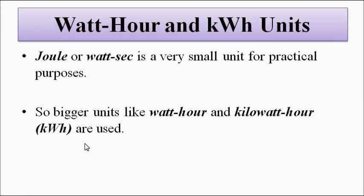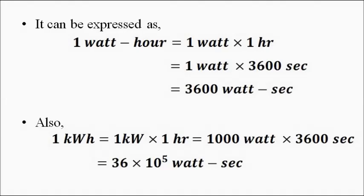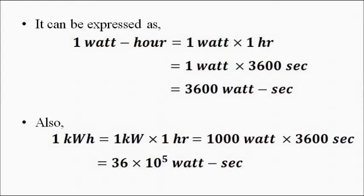The joule or watt-second is a very small unit for practical purposes, so bigger units like watt-hour or kilowatt-hour are used. One watt-hour equals one watt times one hour, which is 3600 seconds, so it equals 3600 watt-seconds. One kilowatt-hour equals one kilowatt times one hour: since one kilowatt is 1000 watts and one hour is 3600 seconds, it becomes 36×10⁵ watt-seconds.